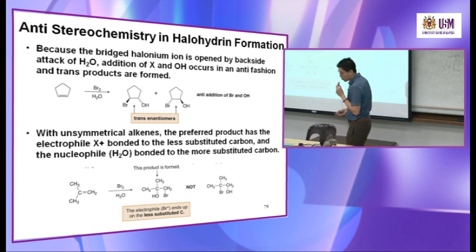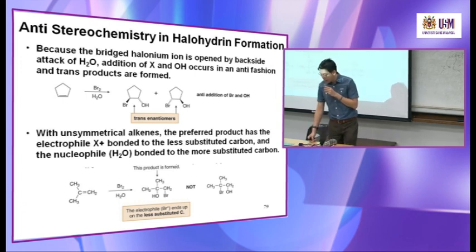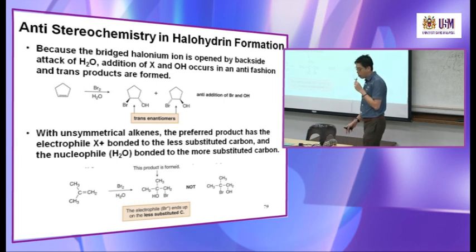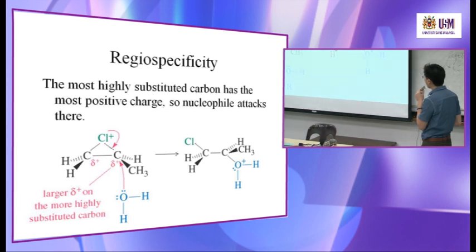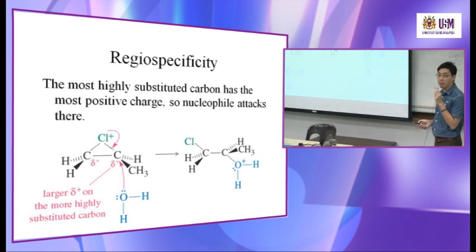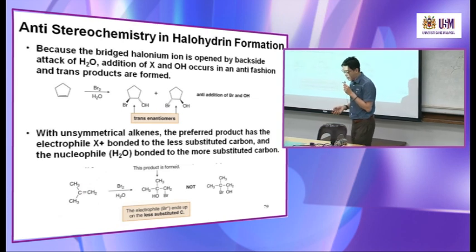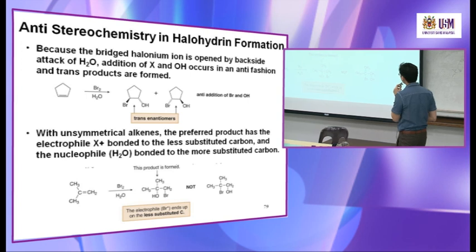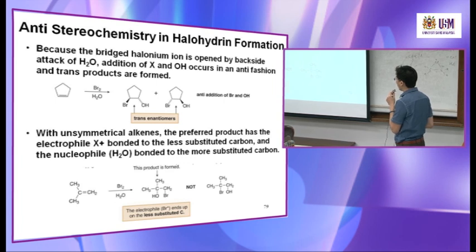With an unsymmetrical alkene, the preferred product has the electrophile X bonded to the less substituted carbon and the nucleophile H2O bonded to the more substituted carbon. So Cl is bonded to the carbon with more H's, following Markovnikov's rule, and OH is attached to the more substituted carbon. This product is preferentially formed.